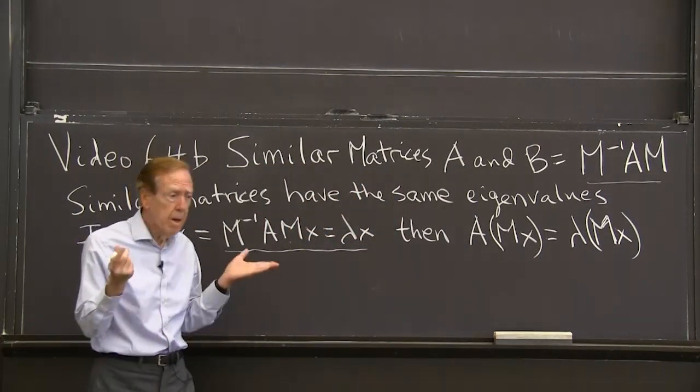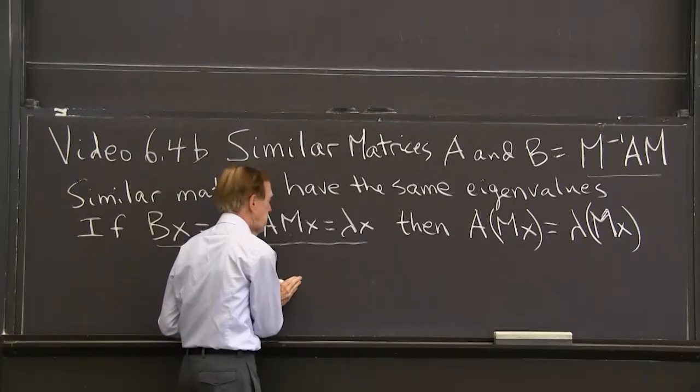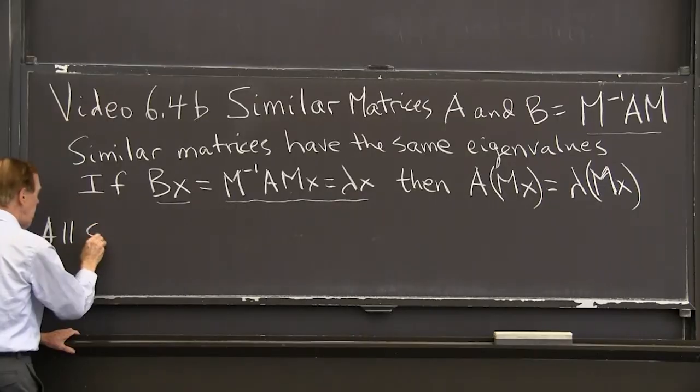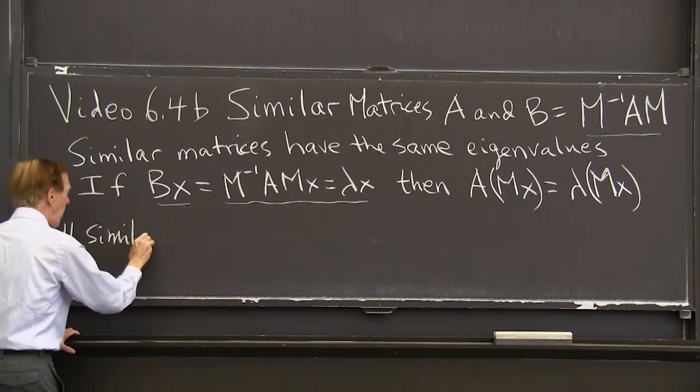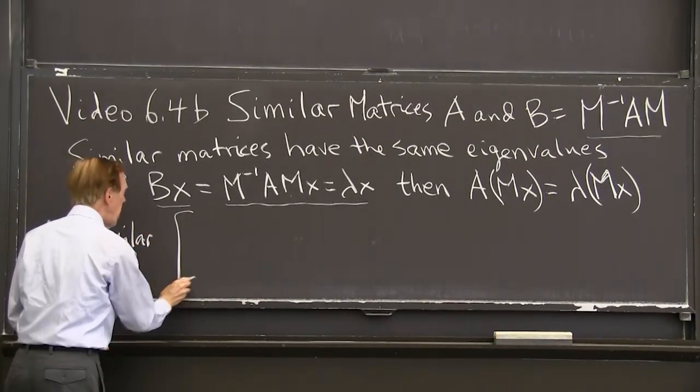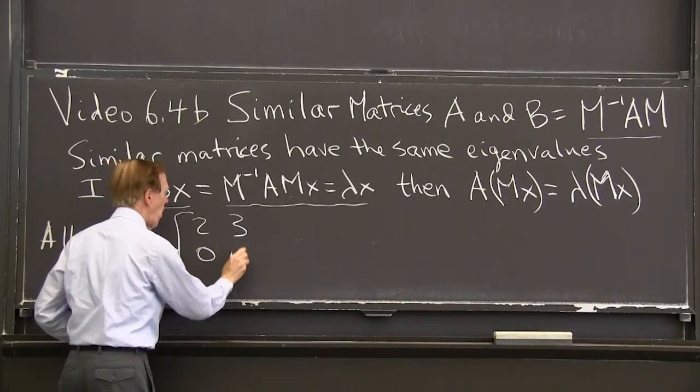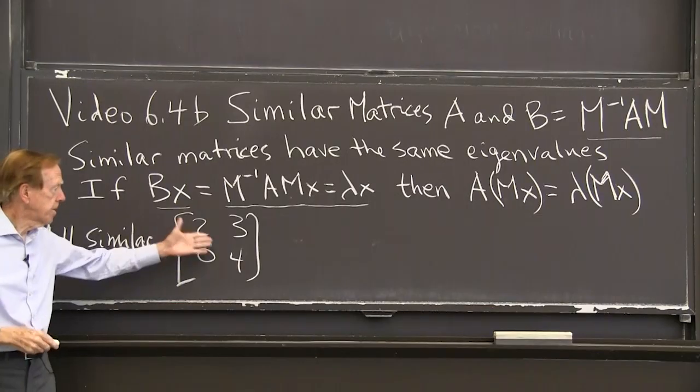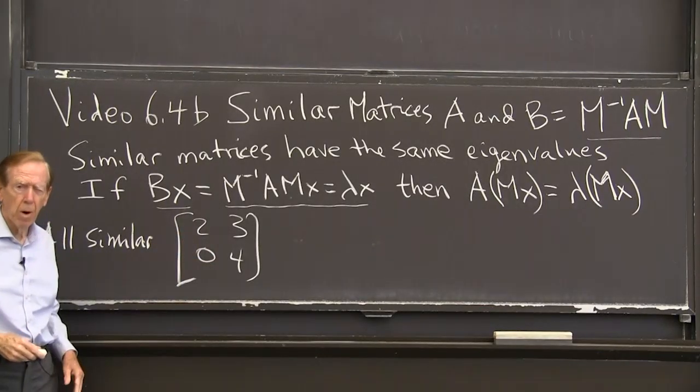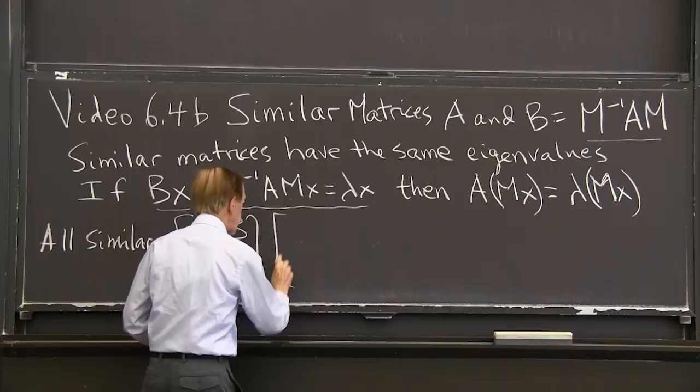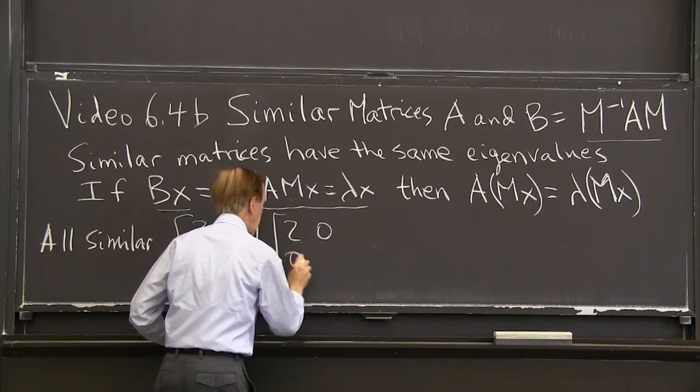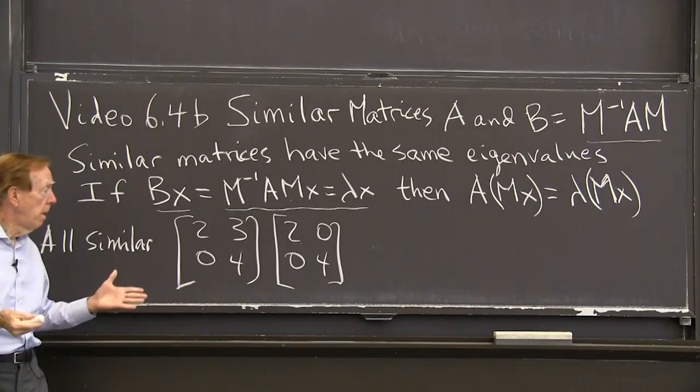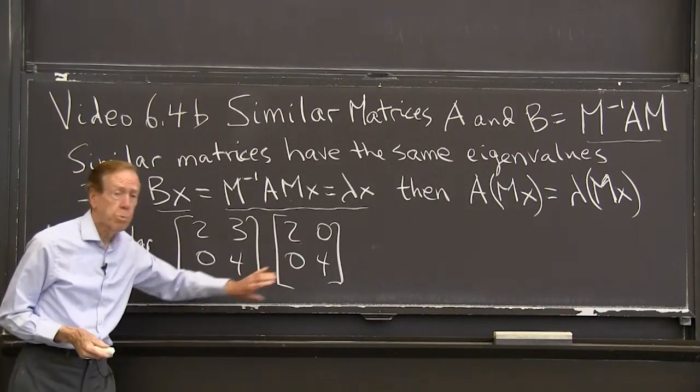OK. So matrices, here are some similar matrices. Let me take some. So these will be all similar. Say 2, 3, 0, 4. OK, that's a matrix A. I can see its eigenvalues are two and four. Well, I know that it will be similar to the diagonal matrix.